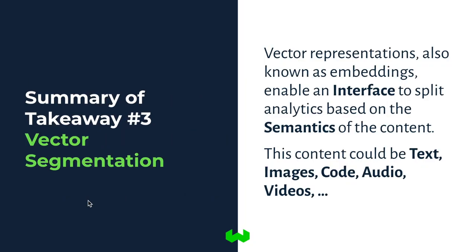To summarize section three: vector representations — also commonly called embeddings — enable an interface to split analytics based on the semantics of the content itself. This content could be text, images, code, audio, or videos. It's really up to your imagination to think about what you're going to encode in these vector spaces.